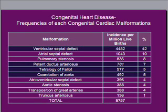Regarding congenital heart disease, here you can see a list of the diseases which approximately tells you the frequency of each. Reading from the top, ventricular septal defect is the most common type of congenital heart disease. Then you get atrial septal defect, then patent ductus arteriosus, tetralogy of Fallot, and coarctation of the aorta. What you should remember is that the most common type is ventricular septal defect, which is around 42%.